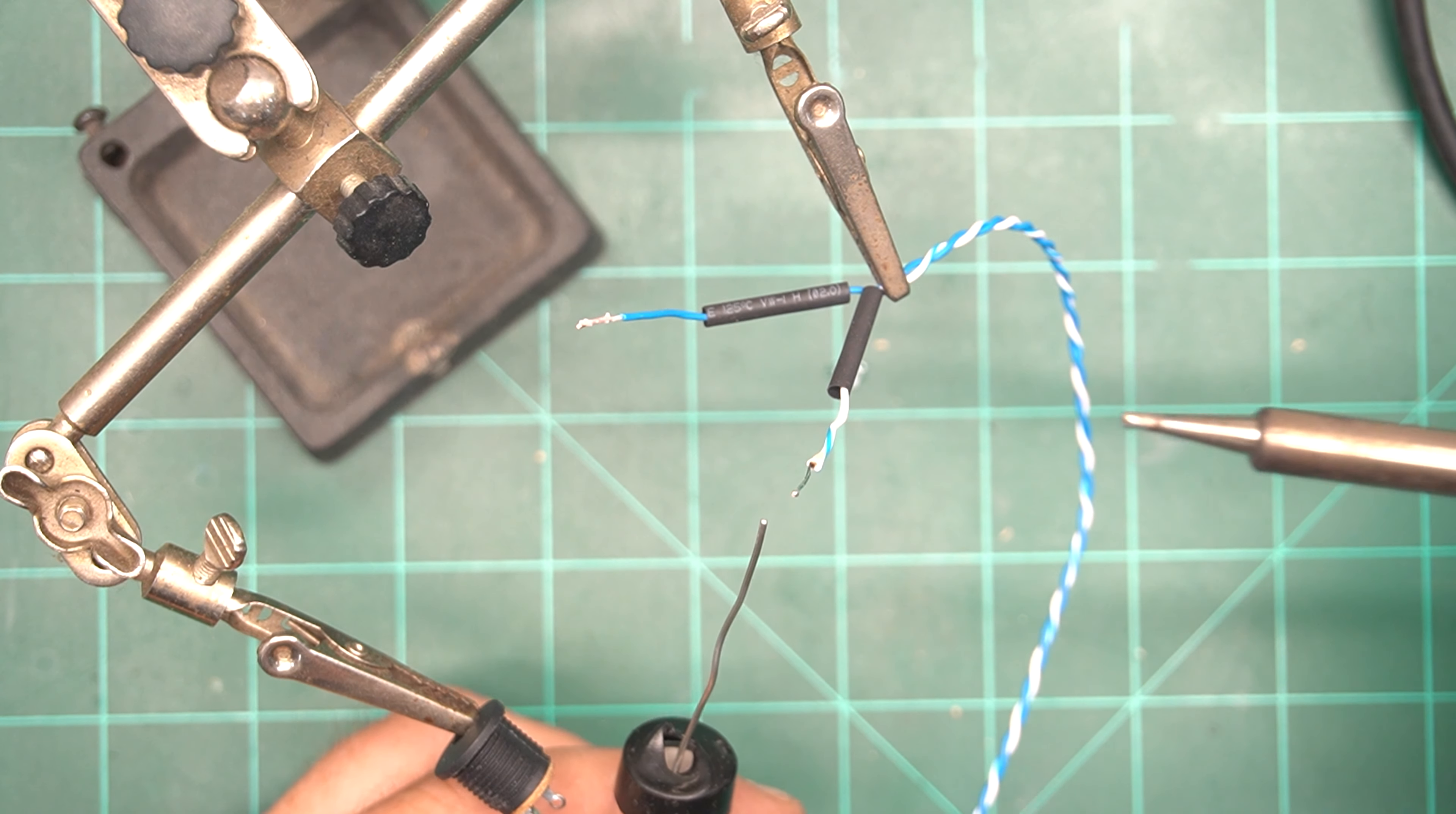Here I did something a little different. Both are pre-tinned but there's a big enough hole where I twisted the wire through for extra connectivity and then I added my solder and then I'll put shrink tubing over that.